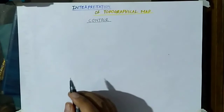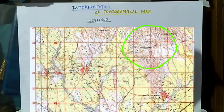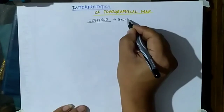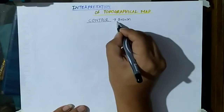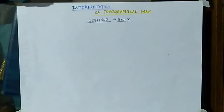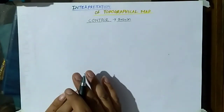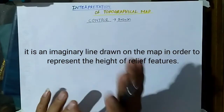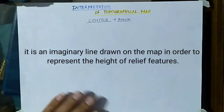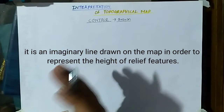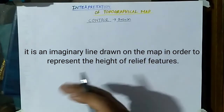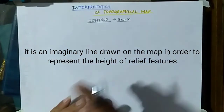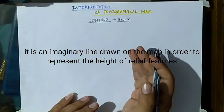Contour lines are drawn on the map and represented with brown color. The contour lines are imaginary lines which are drawn on the map in order to represent the height of a relief feature, especially the elevated surface.